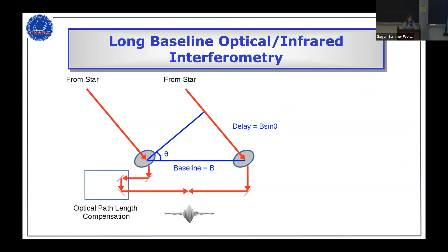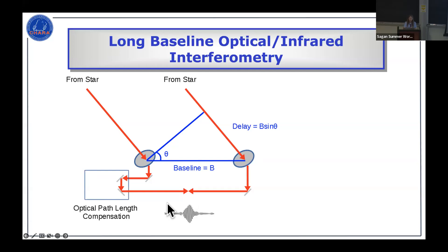One important thing about forming interference fringes is that light entering each telescope has to travel the same distance from the telescope into the lab. The light will arrive at one telescope before the next, so you add a certain amount of path length delay to one arm of the interferometer. For radio interferometry, you can time-tag the signals and do correlation after the fact, but at optical and near-infrared wavelengths you can't time-tag that fast, so you must do all beam combination in real time.